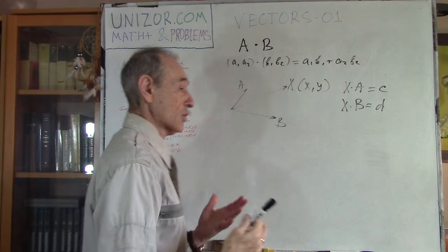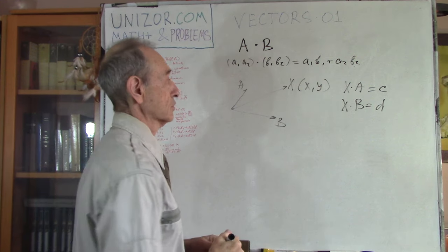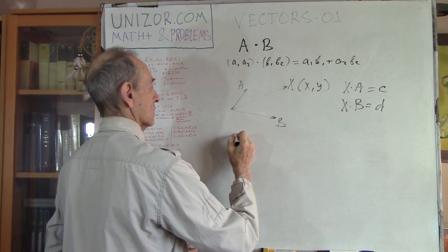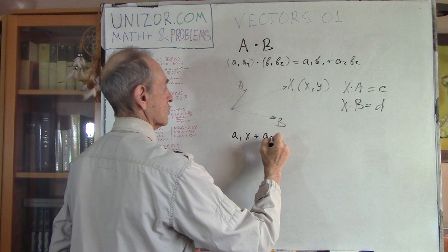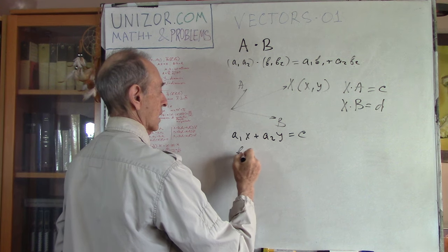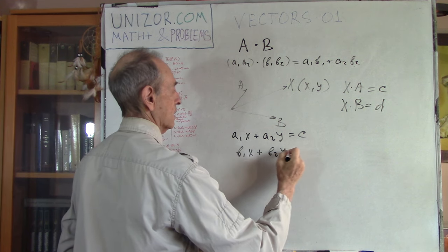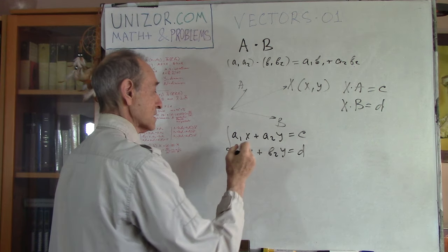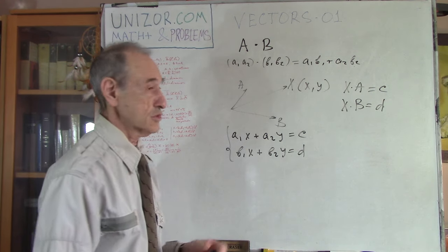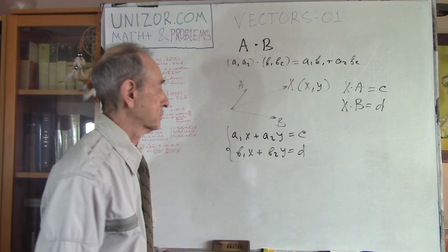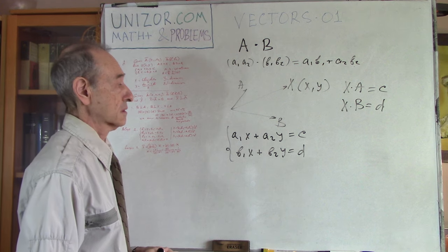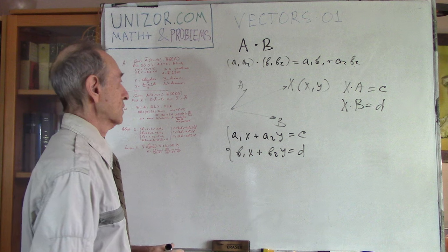In coordinates, it's quite simple. The dot product X·A is A1·x plus A2·y, which equals C. Similarly, B1·x plus B2·y equals D. This is a system of two linear equations with two unknowns, which we can solve using regular algebraic methods for linear equations.